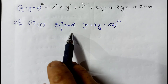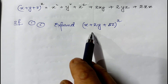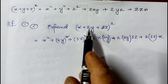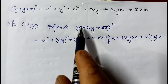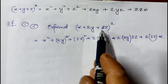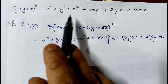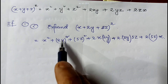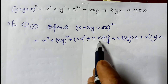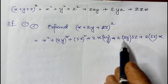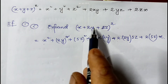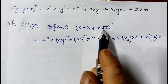In question number 1, it is given: expand (x + 2y + 5z)². In this sum, x is the x part, 2y is the y part, and 5z is the z part. So if I use this identity, it will be x² + y² + z² + 2xy + 2yz + 2zx.